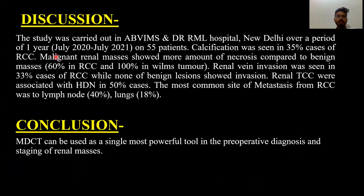Discussion: The study was carried out over a period of one year on 55 patients. Calcification was seen in approximately 35% of RCC cases. Malignant renal masses showed more necrosis compared to benign masses — 60% in RCC and 100% in Wilms tumor. Renal vein invasion was seen in 33% of RCC cases, while none of the benign lesions showed invasion. Renal transitional cell carcinoma was associated with hydronephrosis in around 50% of cases. The most common site of metastasis from RCC was lymph nodes in 40% of cases and lungs in 18%.